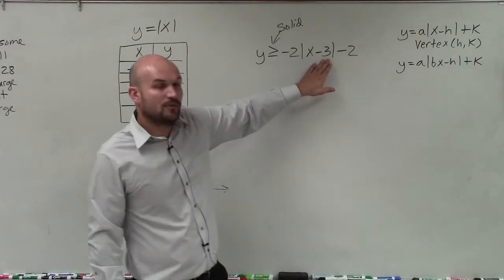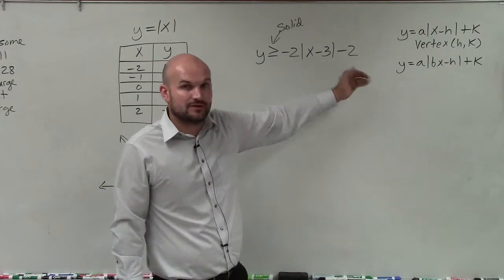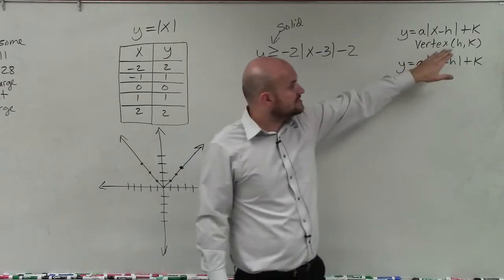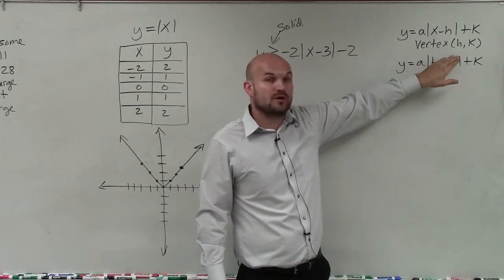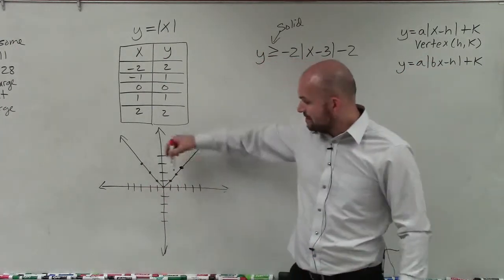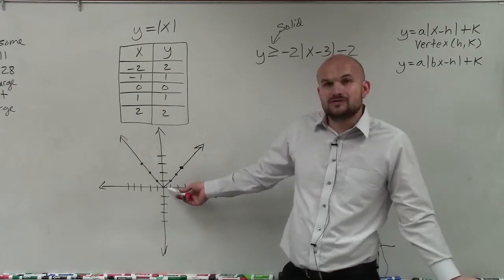Then I need to look at what is my x minus 3 and my minus 2 going to affect my graph. Well, you can see that they are my new coordinates of my vertex. Where the parent graph, the vertex is where the graph changes direction, is at 0, 0.